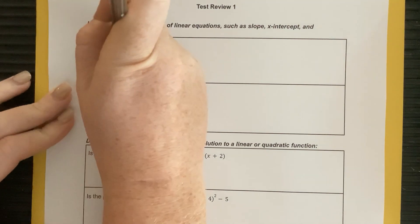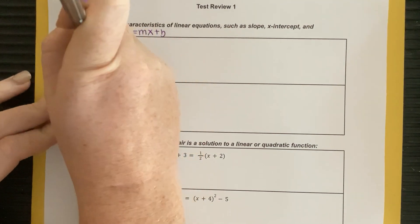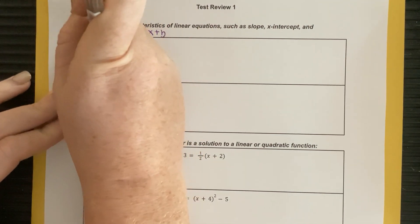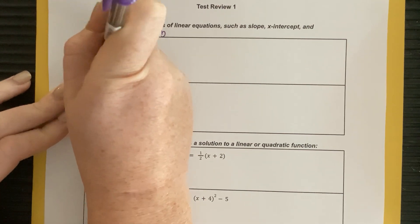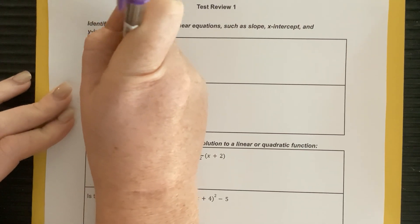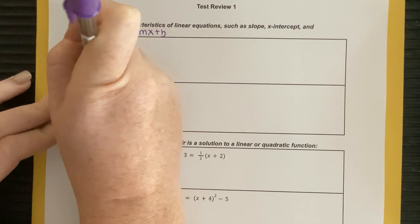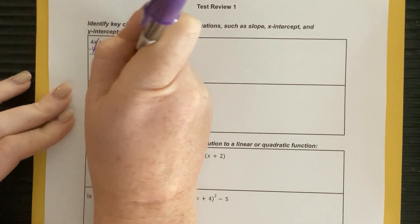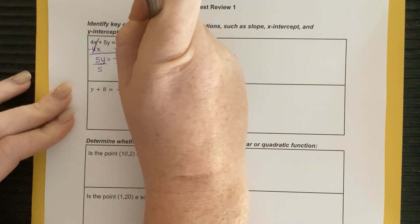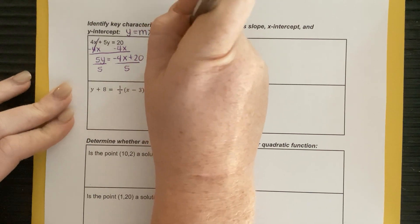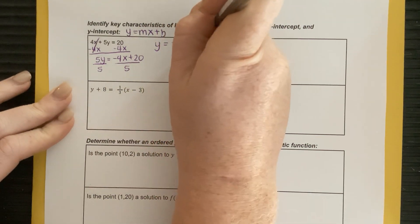I'd start by subtracting 4x, subtracting 4x. These are going to cancel, and I'm going to get 5y is equal to negative 4x plus 20. Divide by 5, divide by 5, and I'm going to get y equals negative 4 fifths x plus 4.